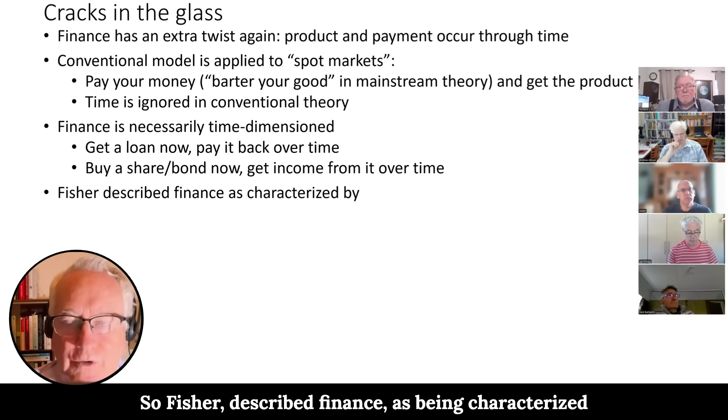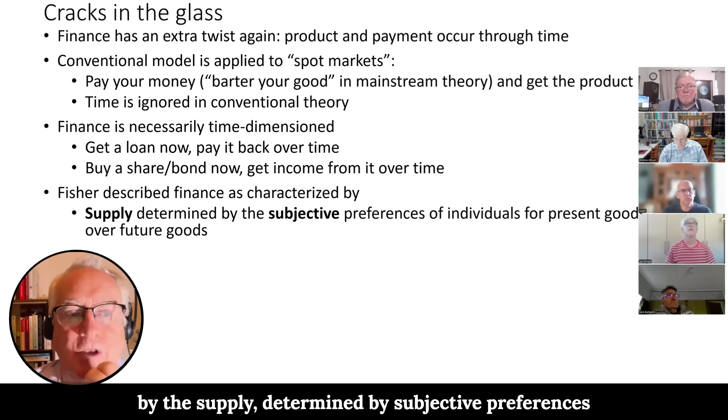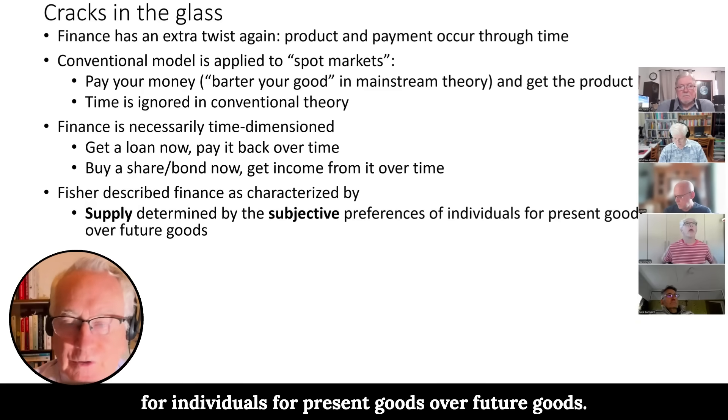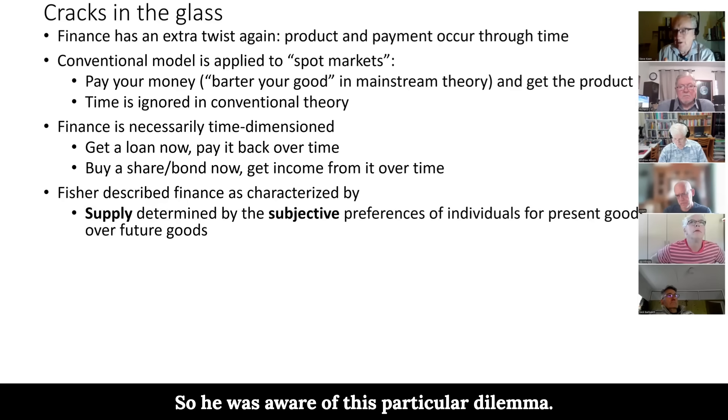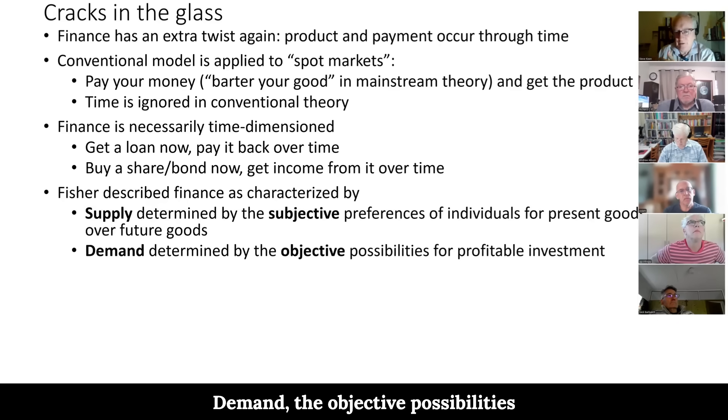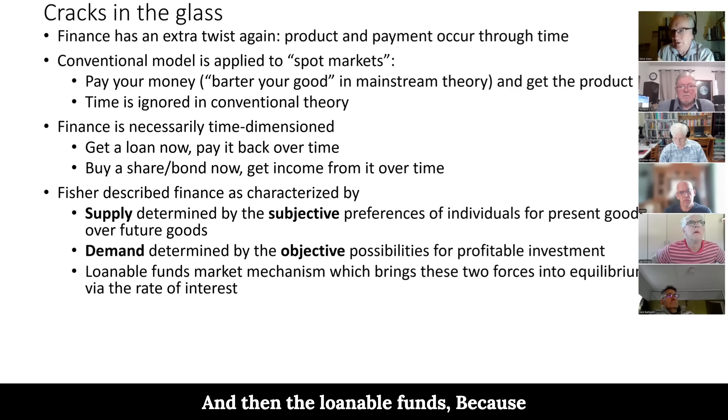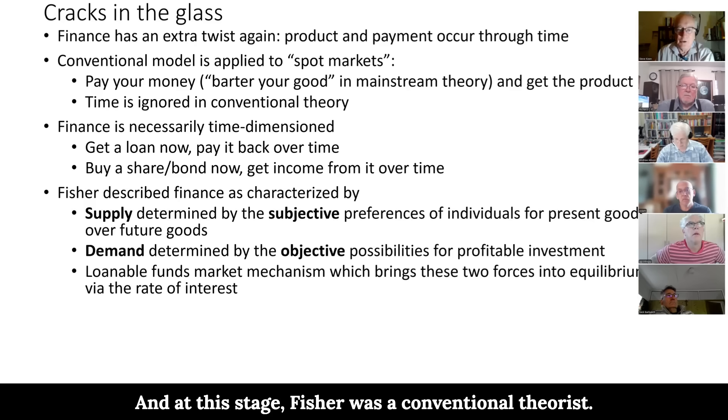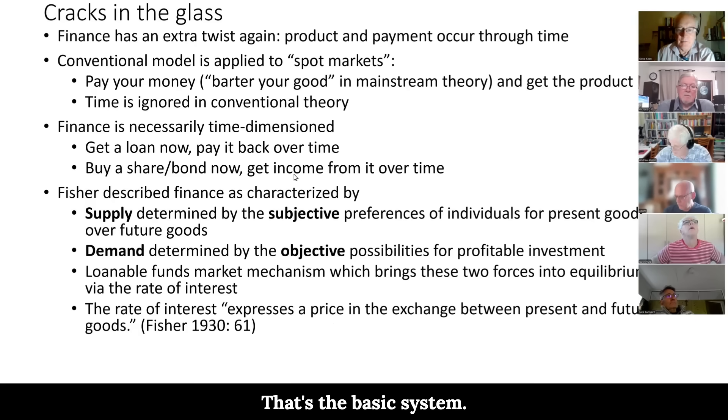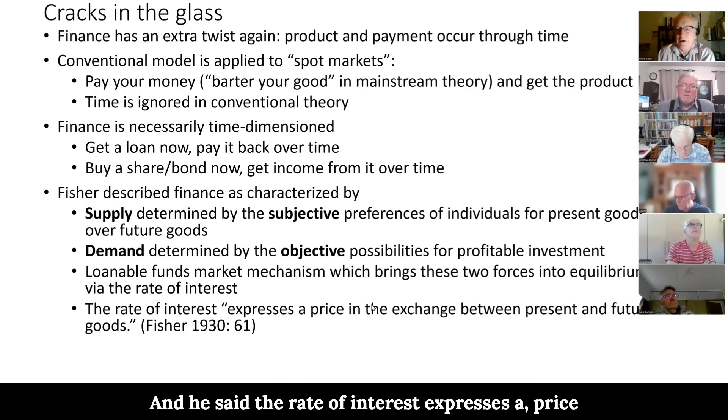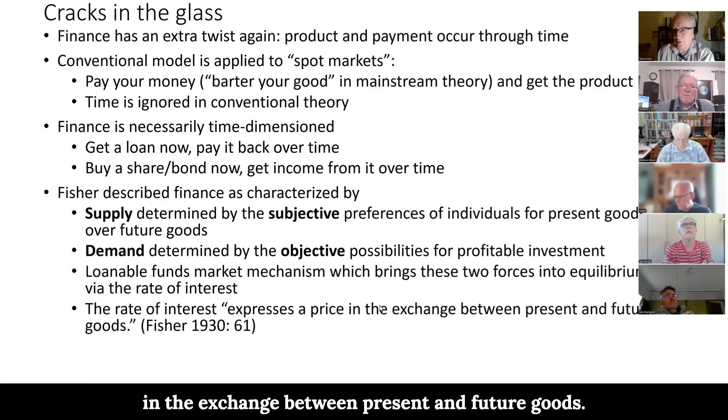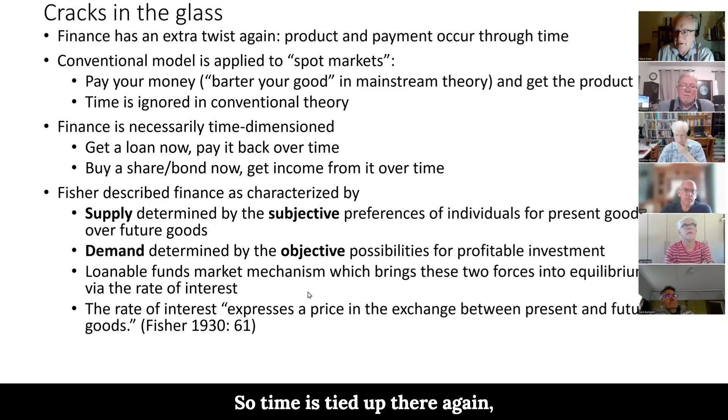So Fisher described finance as being caused by the supply determined by subjective preferences for individuals for present goods over future goods. So he was aware of this particular dilemma. Demand, the objective possibilities of profitable investment. And then the loanable funds, because fundamentally there's no understanding of money creation in conventional neoclassical theory. And at this stage Fisher was a conventional theorist. That's the basic system. And he said the rate of interest expresses a price in the exchange between present and future goods. So time is tied up there again, which he's acknowledging.